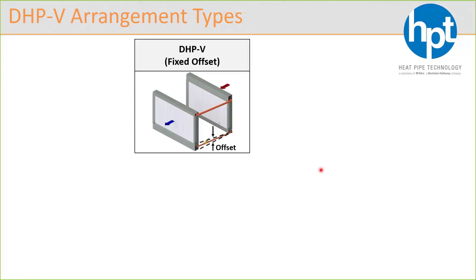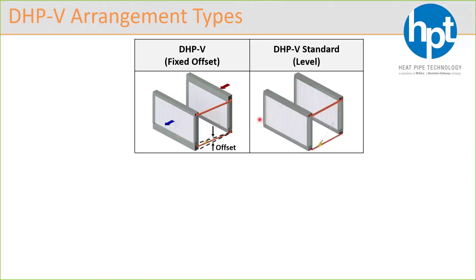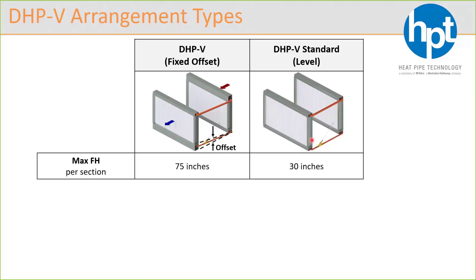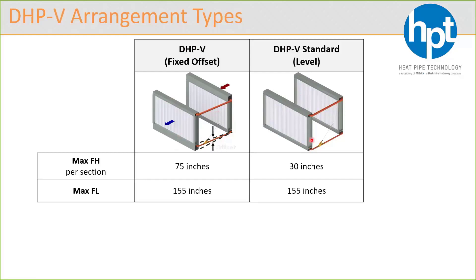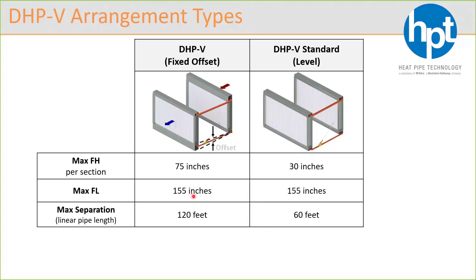For DHPV arrangements, we only have two types. One is the DHPV with a fixed offset — that's when you're elevating the reheat above the pre-cool. The other is the DHPV standard level arrangement. The max fin height for fixed offset is 75 inches versus 30 inches for level. Max fin length for pre-cool and reheat is 155 inches for both cases. Max separation is 120 feet for fixed offset and 60 feet for level, though in practice with DHPVs or wraparounds you're typically looking at 10 to 12 feet of separation.